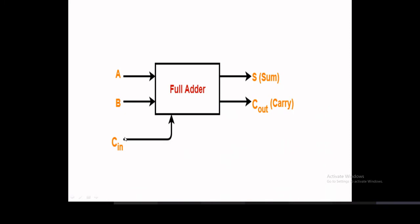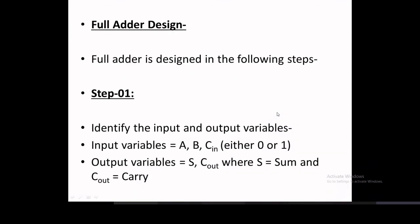A, B, and C are the three bit inputs, and sum and carry are the two bit outputs — one bit for sum, one bit for carry. Step one: identify the input and output variables. Input variables are A, B, and carry in. This carry in can be zero or one coming from the previous circuit. Output variables are S for sum and carry out.